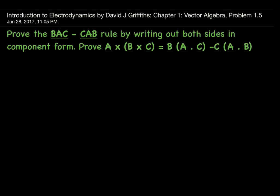Hi there, today we will be solving problem 1.5 from the chapter of vector algebra. The problem statement is as below: prove the BAC minus CAB rule by writing out both sides in component form. What it essentially means is that we have to prove A cross (B cross C) equals B multiplied with the dot product of A and C, minus C multiplied with the dot product of A and B.